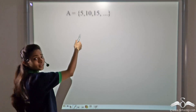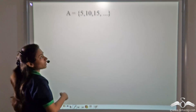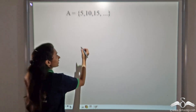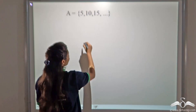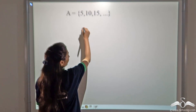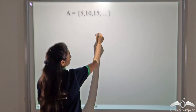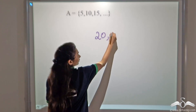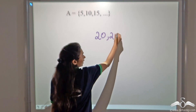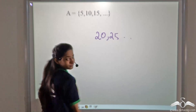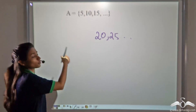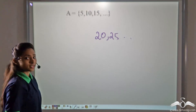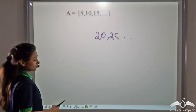Can you write two more elements after this? Yes, elements of 5 are 5, 10, 15, 20, 25 and so on. So you can identify this set.